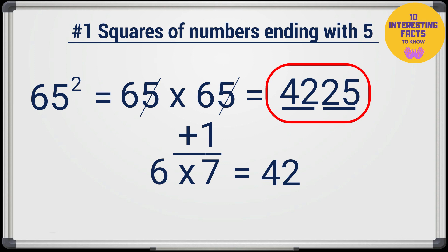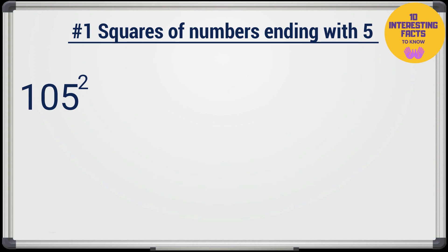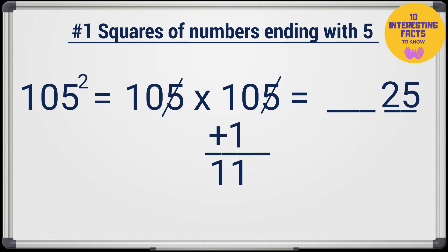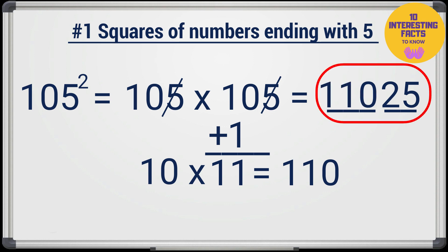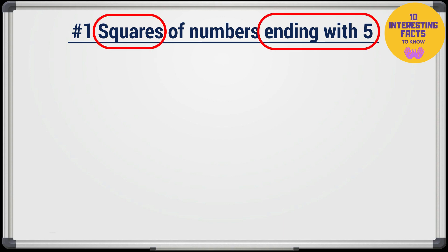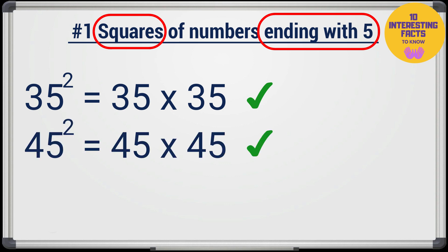Now let's try with another example, 105 square. 105 times 105. We know the last part of the answer is 25. Now we'll find 10 times 11 which is 110 and the answer is 11,025. Remember this trick is only for squares of numbers ending with 5, so you can solve 35 square, 45 square, but not for 35 times 45.